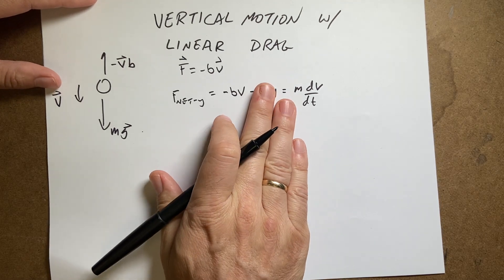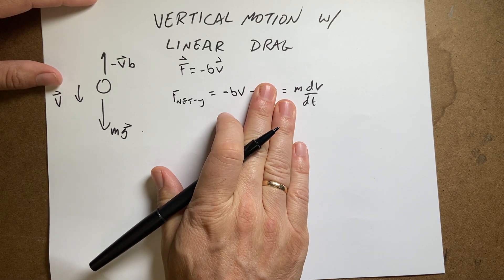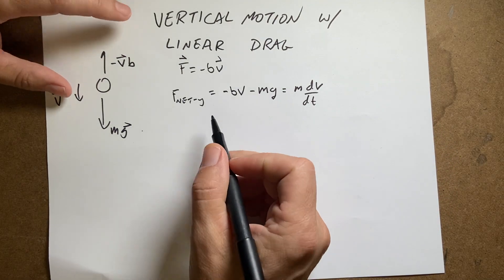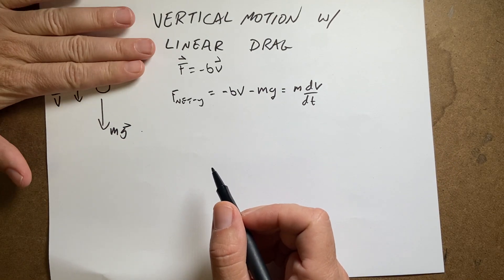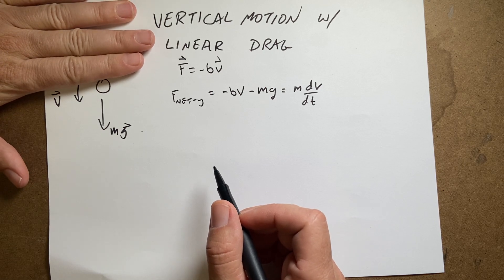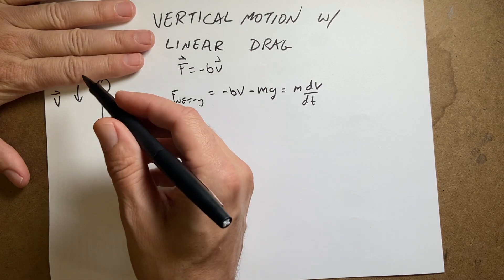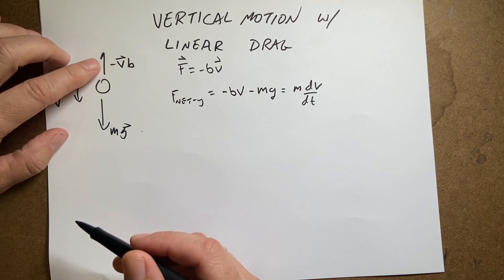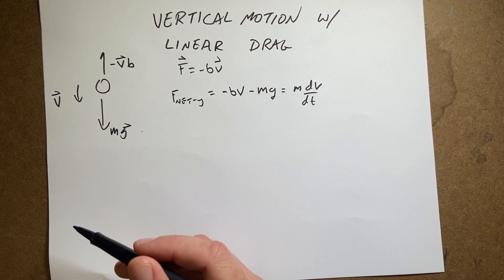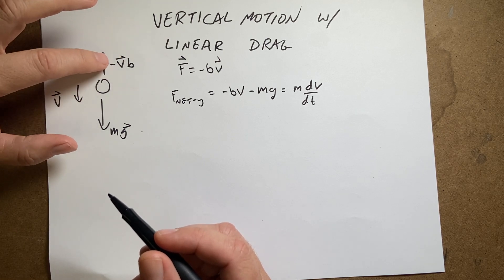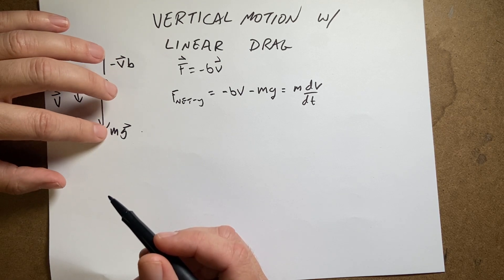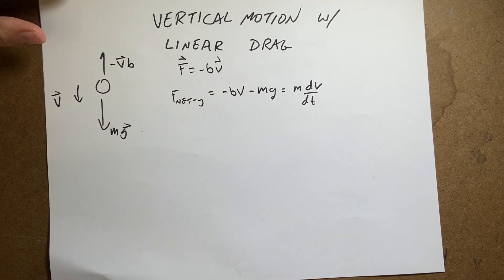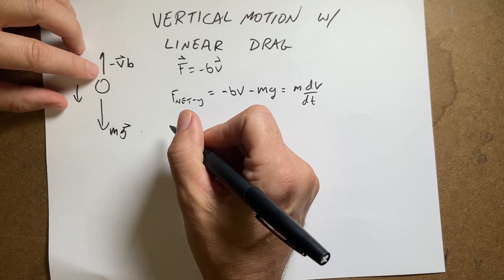Now last time we did this it didn't have this gravity term, so it was easy to separate the V's on one side and T's on the other. In this case we'll do something similar. Imagine I drop the ball from rest — it starts with only the gravitational force acting on it, so it increases in speed. It gets faster and faster, so the drag force gets greater and greater, and eventually the drag force equals the gravitational force and the ball no longer increases in speed but reaches a constant speed. This is terminal velocity.